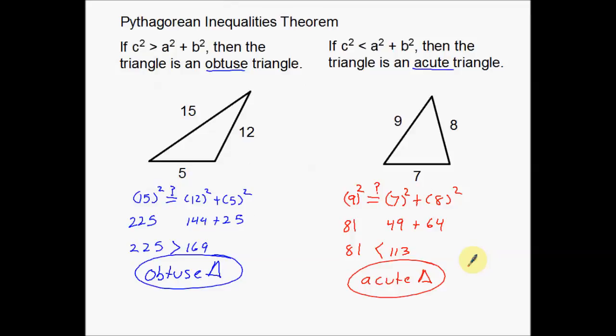Alright. That's it. That's basically using the Pythagorean Inequalities Theorem. So again, the Pythagorean Theorem can be used for much more than just finding a hypotenuse or finding a missing leg of a triangle. You can use it to determine if a triangle is a right triangle. And if it's not a right triangle, then you can use the Pythagorean Theorem to figure out if it's an obtuse triangle or an acute triangle.